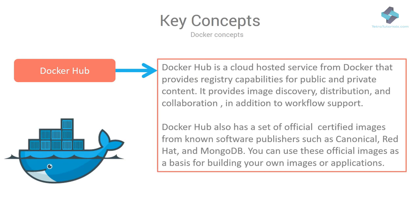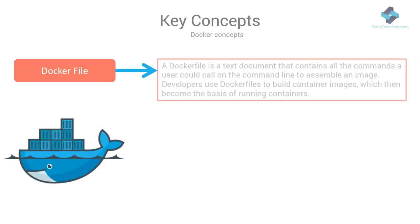Docker Hub is a cloud-hosted service from Docker that provides registry capabilities for public and private content. It is a public cloud-based container registry managed by Docker, offering image discovery, distribution, and collaboration workflow support. Docker Hub also has a set of official images that are certified by Docker — these are images from known software publishers such as Canonical, Red Hat, and MongoDB. You can use these official images as a basis for building your own images or applications.